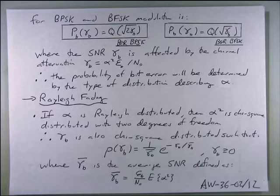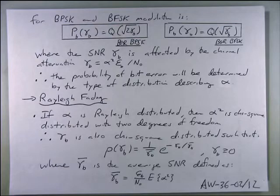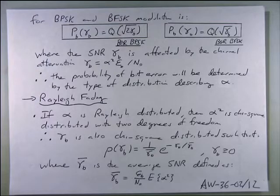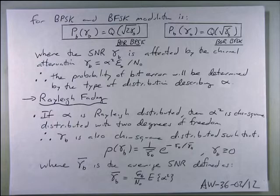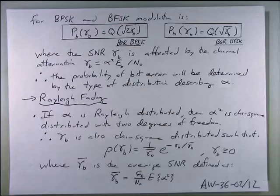The PDF of gamma_B is equal to (1 / gamma_B_bar) * exp(−gamma_B / gamma_B_bar) for gamma_B ≥ 0, where gamma_B_bar is the average signal-to-noise ratio. To find the average gamma_B, you take the average of alpha squared — which follows a Rayleigh distribution — and multiply by the energy per bit divided by the noise power spectral density.